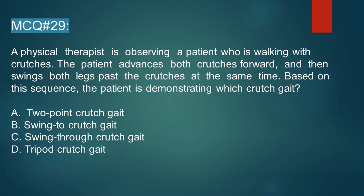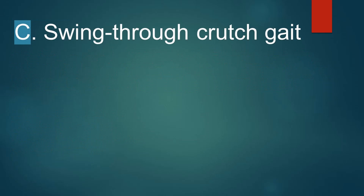Next we have Scenario 29: a physical therapist is observing a patient who is walking with crutches. The patient advances both crutches forward and then swings both legs past the crutches at the same time. Based on this sequence, which crutch gait is the patient demonstrating? Option A: two-point crutch gait. Option B: swing-to crutch gait. Option C: swing-through crutch gait. Option D: tripod crutch gait. The correct answer is Option C, swing-through crutch gait.